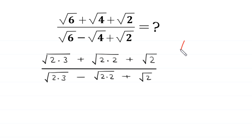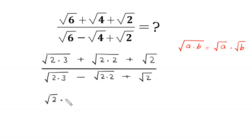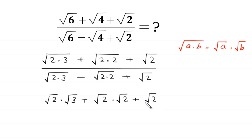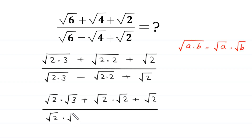Now, by using the property that square root of a times b equals square root of a times square root of b, square root of 2 times 3 becomes square root of 2 times square root of 3, square root of 2 times 2 becomes square root of 2 times square root of 2, plus square root of 2, divided by square root of 2 times square root of 3, minus square root of 2.